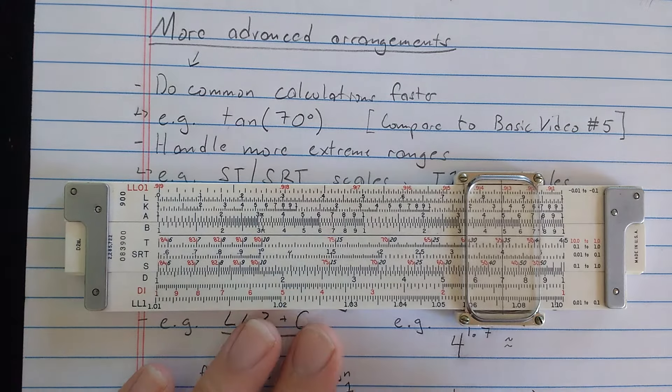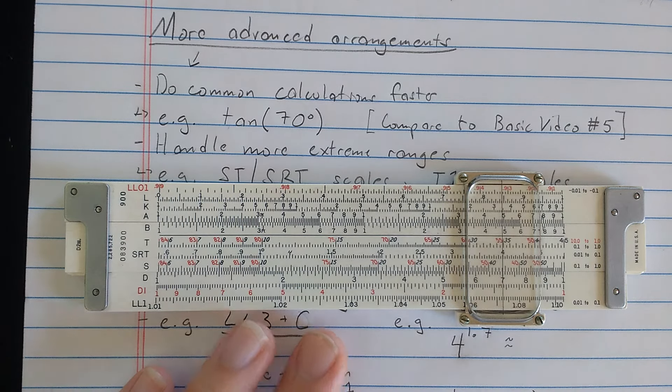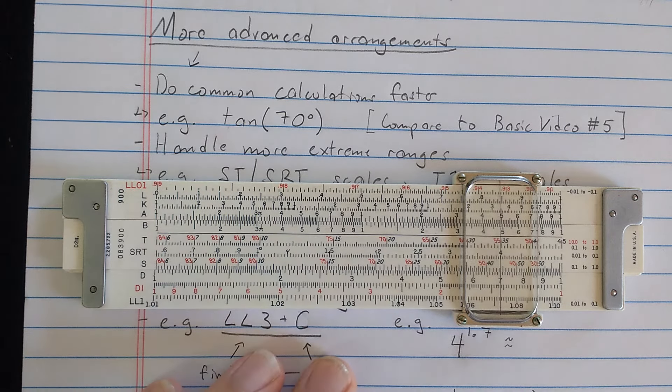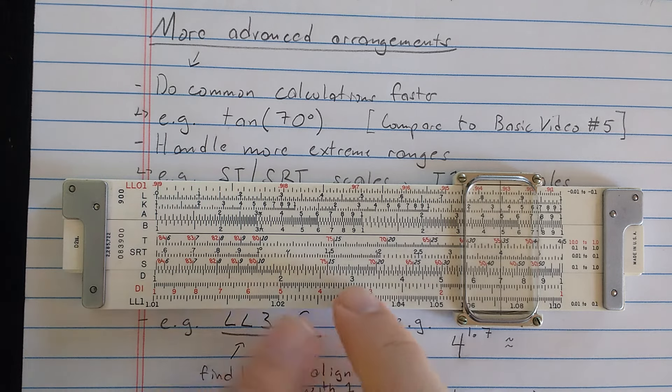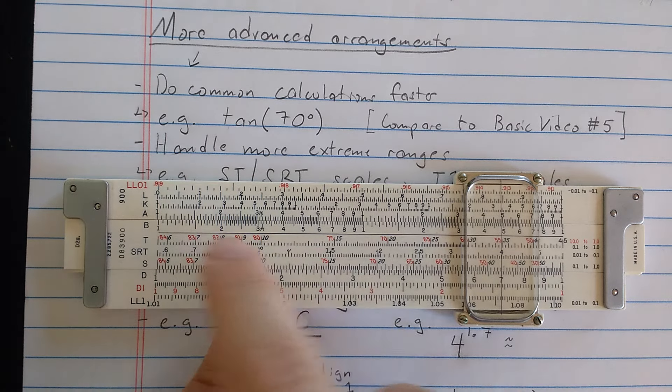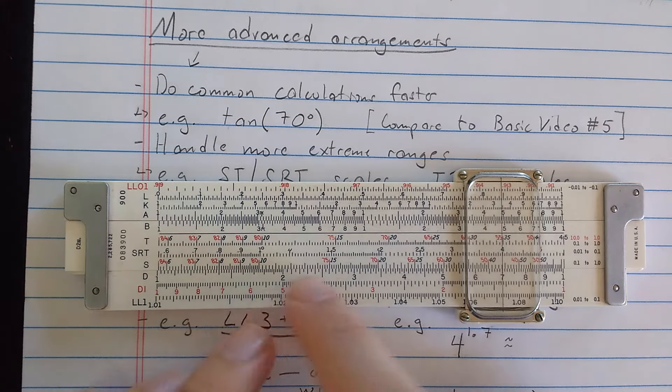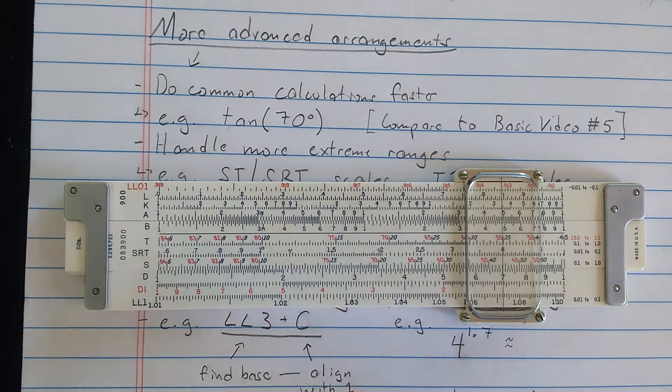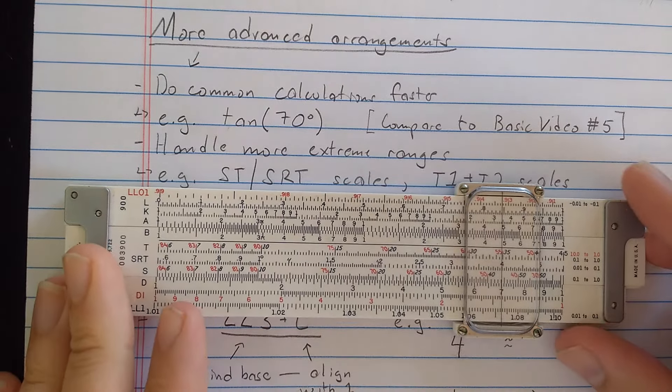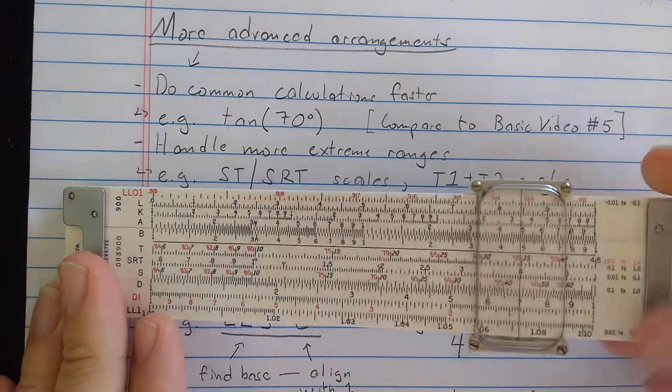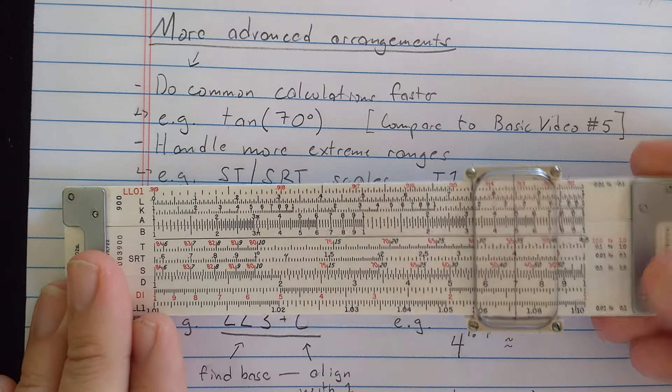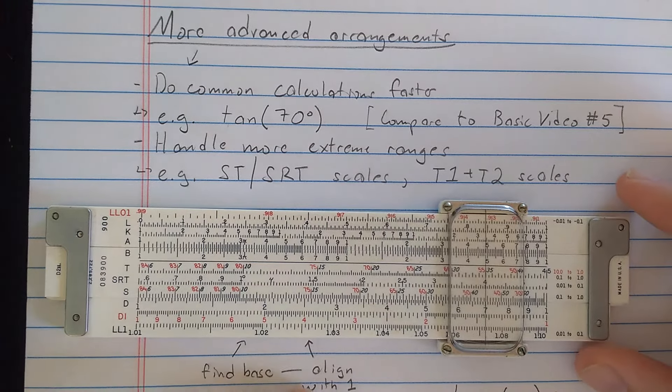You see the S and the T scales, these are the same as we had. You can see the complements of the angles are marked unlike on our basic slide rule. They're also marked in red because they decrease as you go to the right. So you can compute cosines without having to compute the complements in your head because the complements are printed on the sine scale. However, they have a slightly fancier arrangement, which allows us to do some things in a nicer way. So if you remember our basic slide rule video number five, I computed a tangent of 70.